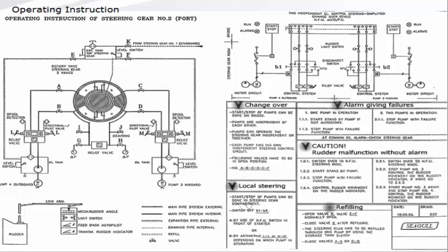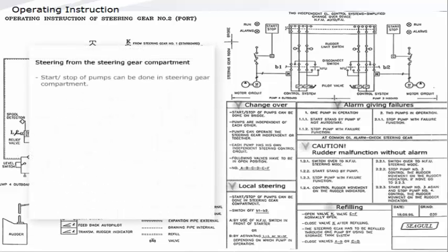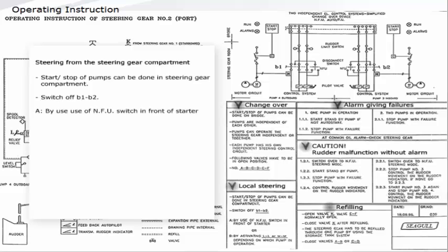Steering from the steering gear compartment: Start and stop of pumps can be done in steering gear compartment. Switch off B1 and B2. A: By use of the non-follow-up switch in front of starter. Or B: By activating LL or MM depending on which pump in operation.